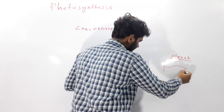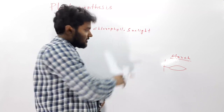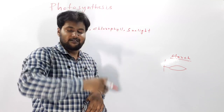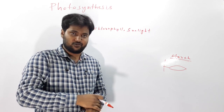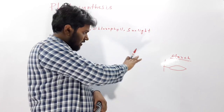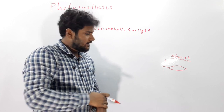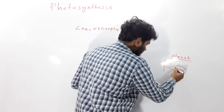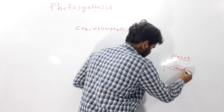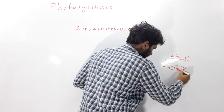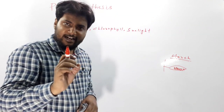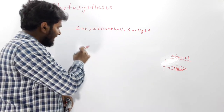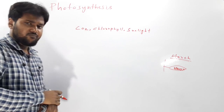In the absence of sunlight, photosynthesis will not occur — for example, at nighttime. If in any leaf we find starch, we can conclude that photosynthesis has occurred there. So what we look for as evidence of photosynthesis is starch.